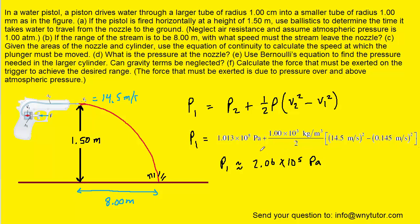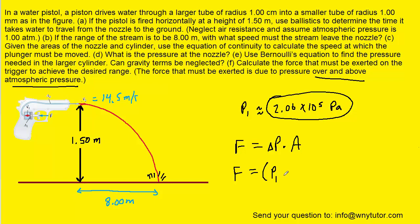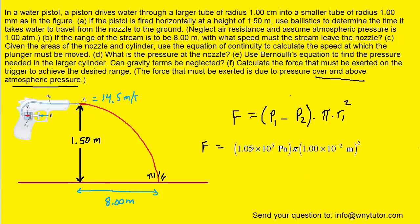That is the correct answer to part E. For part F, we calculate the force that must be exerted on the trigger to achieve the desired range. Force equals pressure multiplied by area, but we use the difference in pressure — P1 minus atmospheric pressure P2 — since the force is due to pressure over and above atmospheric. The area used is the cross-sectional area of the larger tube: pi times radius 1 squared. Plugging in the known values, we get approximately 33.0 Newtons — the correct answer to part F.